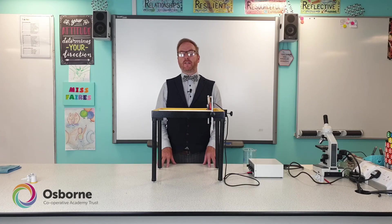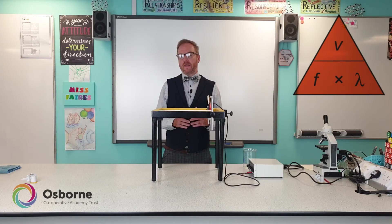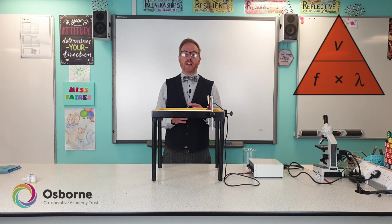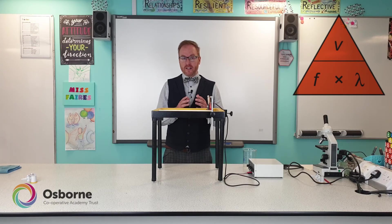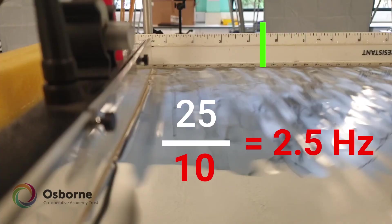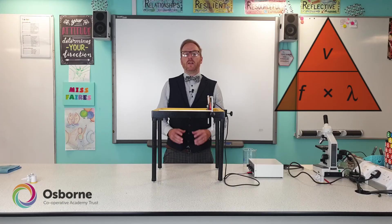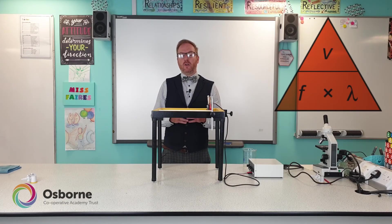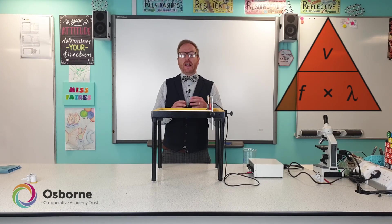The second part of the Core Practical is asking us to calculate the speed of the wave by using the frequency and the wavelength. To calculate the frequency, we need to use the number we worked out earlier for the amount of waves that were created in ten seconds and divide that by ten. Once we've divided that by ten, we can multiply that by the wavelength we estimated earlier. That should give us a reading for the speed of the wave as well.